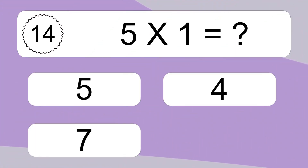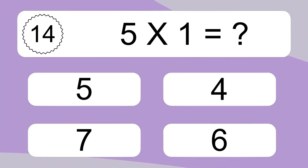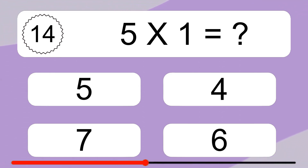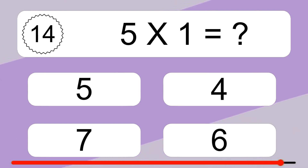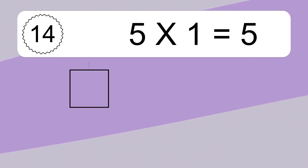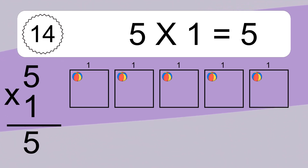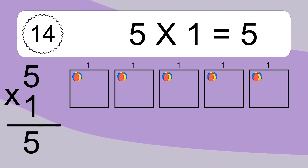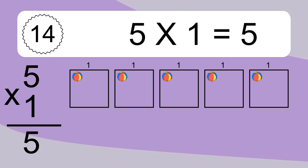5 times 1 equals what? We have 5 boxes, and each box has 1 colorful ball inside. You will have 5 times 1 balls. This equals 5 balls.